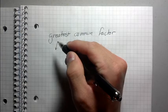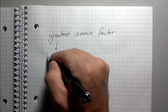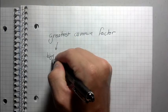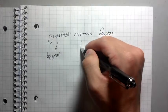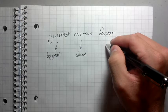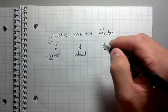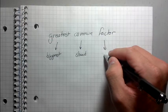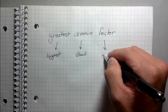Greatest in math terms really means biggest. Common means shared. And factor is something that multiplies.